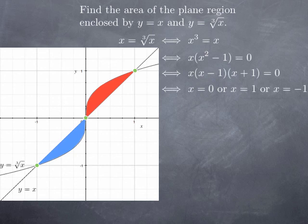And therefore, the product is 0 if one of the factors is 0, that is, if x equals 0, x equals 1, or x equals negative 1.